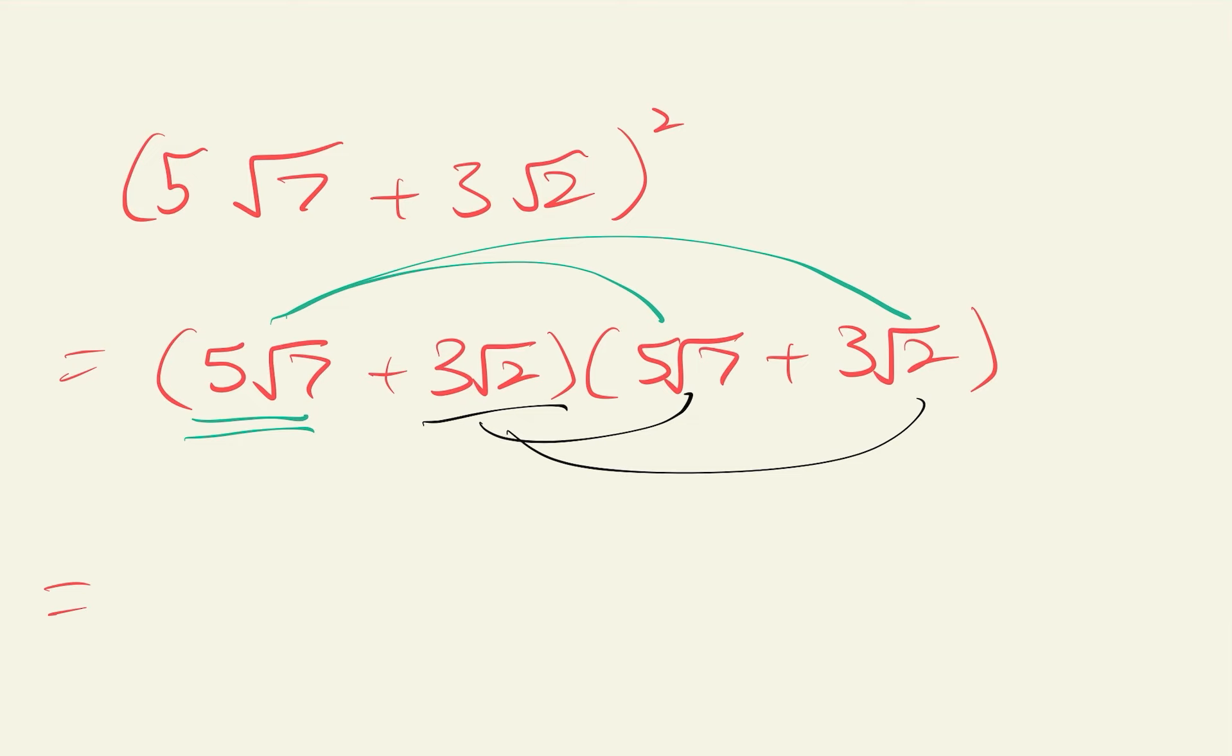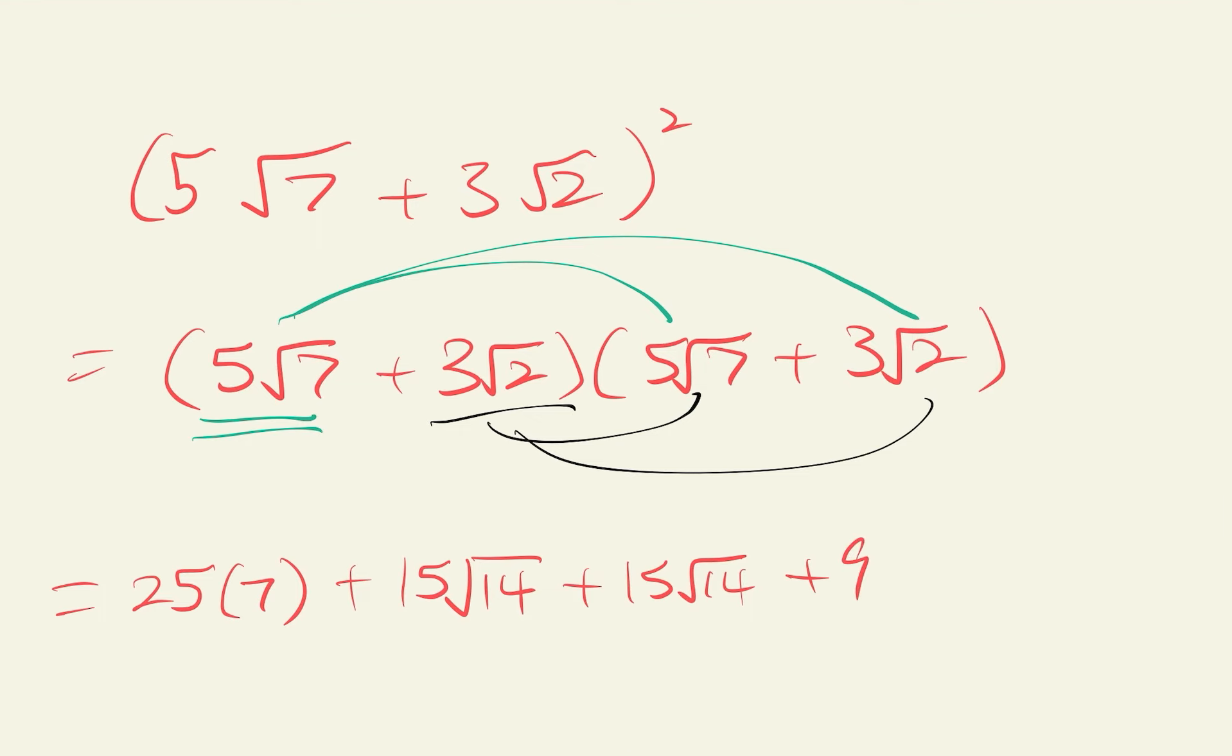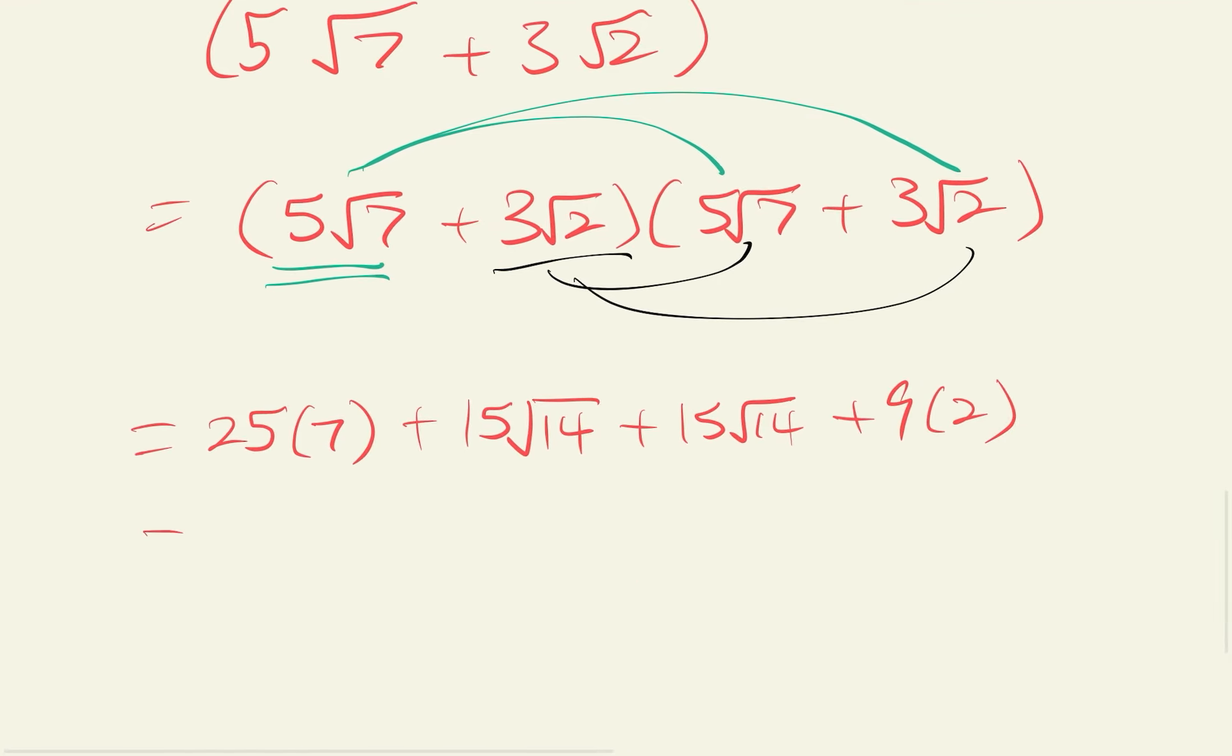So 5 square root 7 times 5 square root 7. So technically, 5 times 5 is 25. Square root 7 times square root 7 is technically just square root 7 square. So that will just give you 7. In the next step, we move. 5 times 3 is 15. Square root 7 times square root 2. Remember our first video, you can write that as square root 7 times 2. So square root 14. So same thing here, same thing. So we get 15 times square root 14. Then the last part is 3 times 3 is 9. Square root 2 times square root 2 is just 2. So if we write this together, we will get 175 plus 30 square root 14 plus 18.